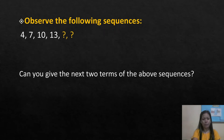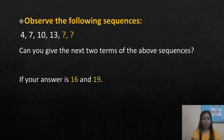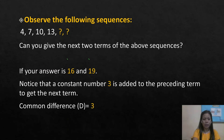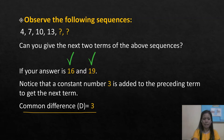Observe the following sequence: 4, 7, 10, 13. Can you give the next two terms? If your answer is 16 and 19, then you are correct. Notice that a constant number 3 is added to each preceding term to get the next term, so our common difference is 3.